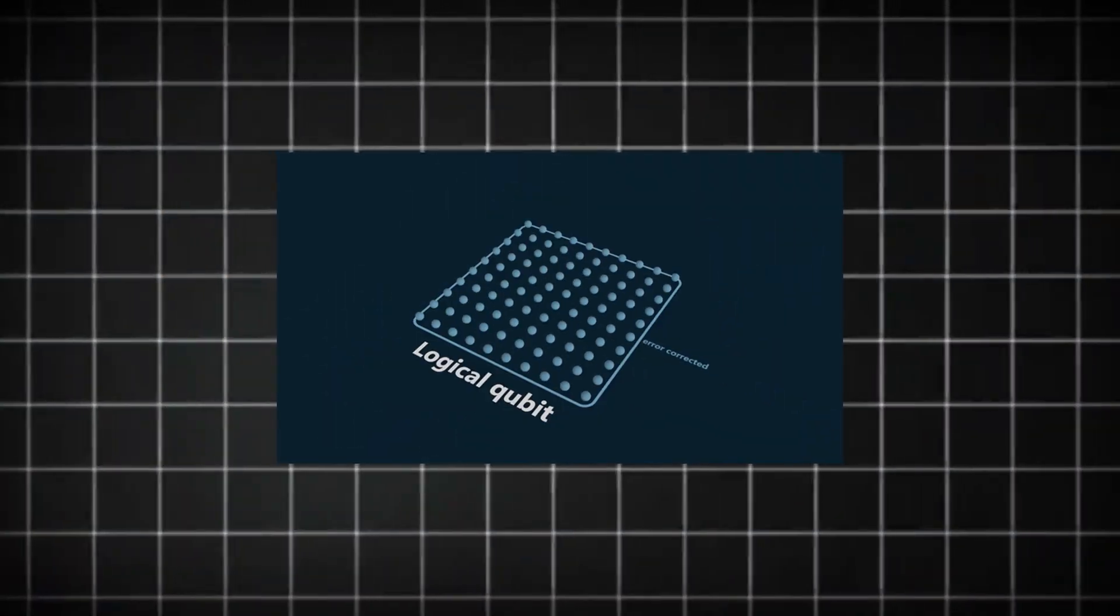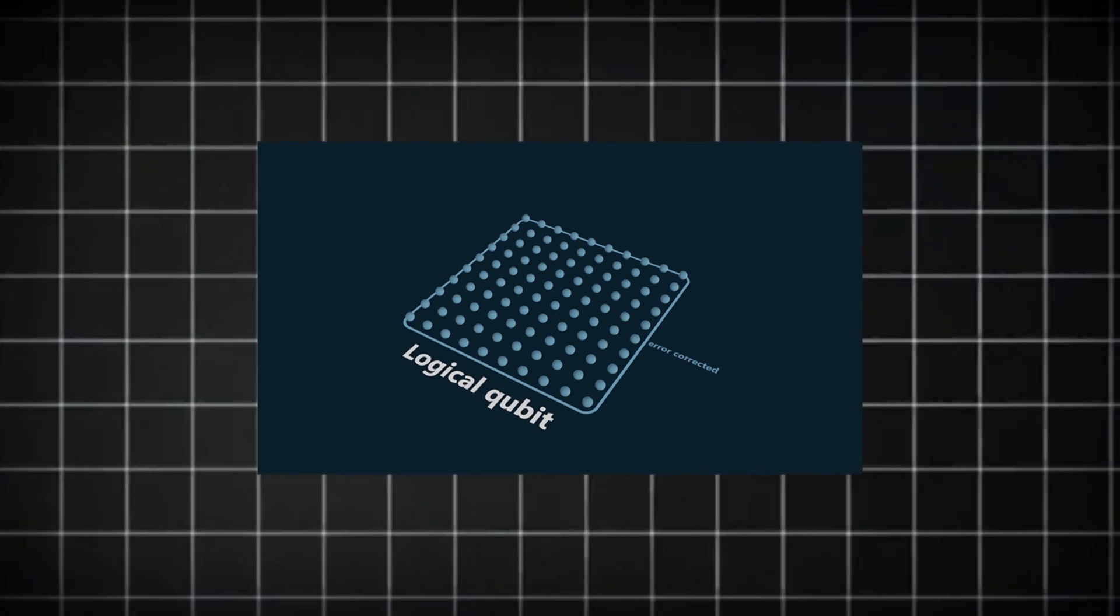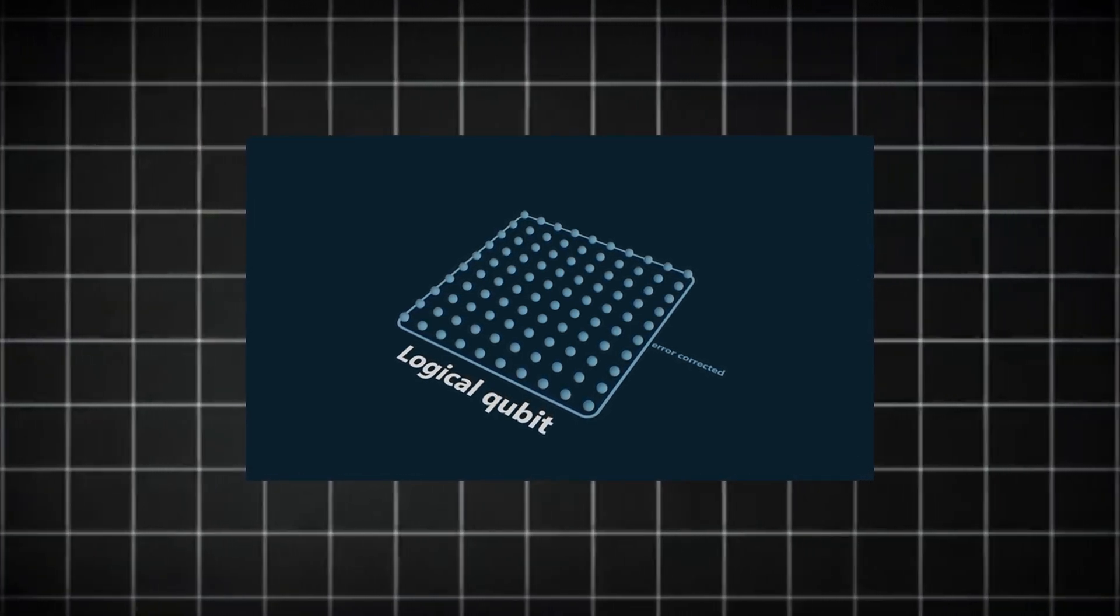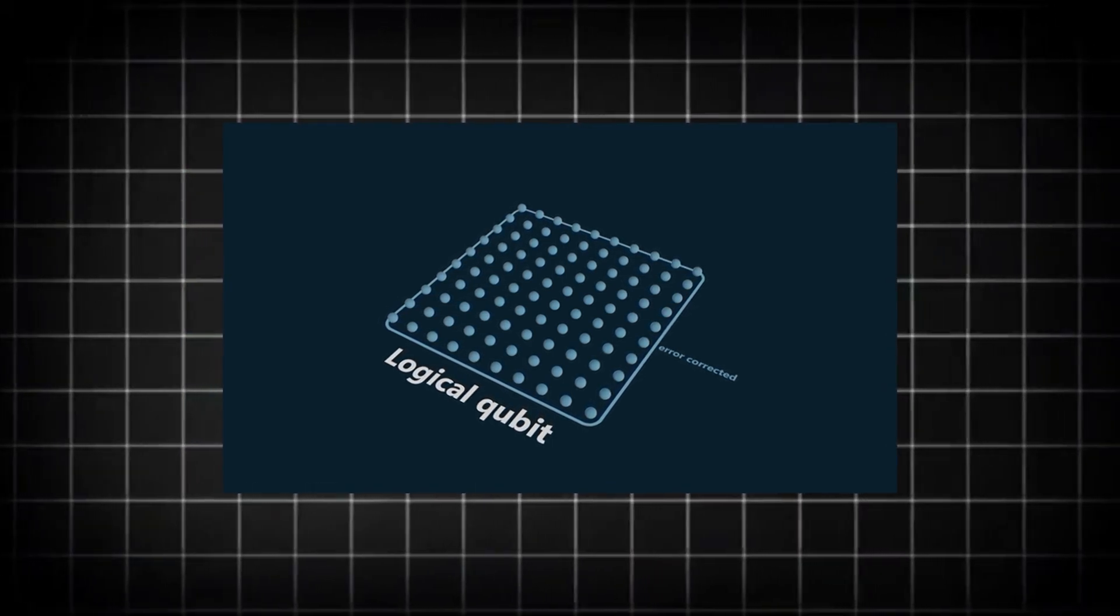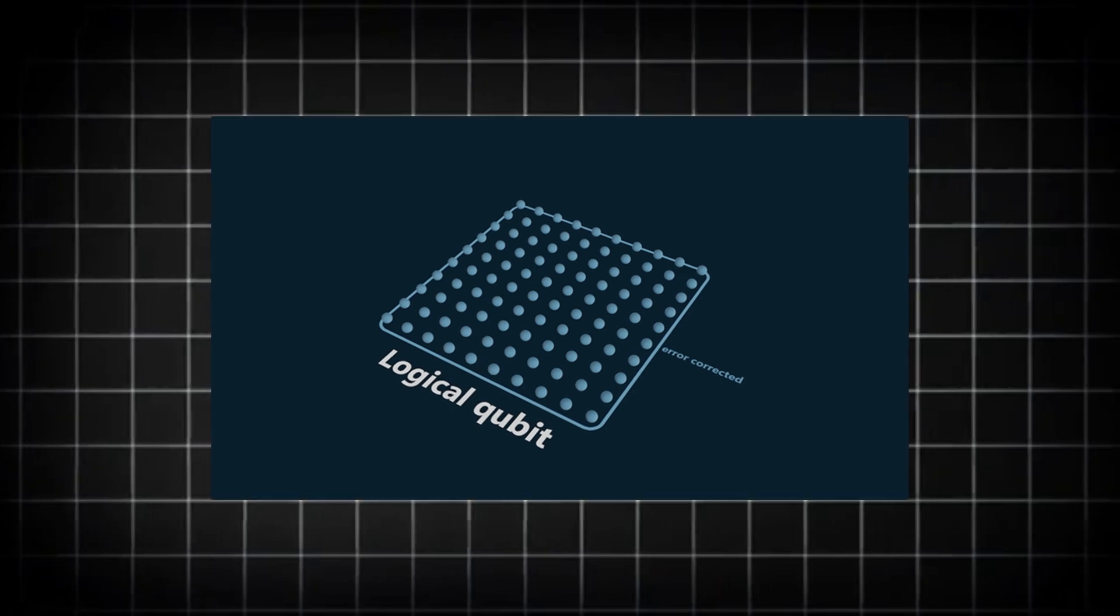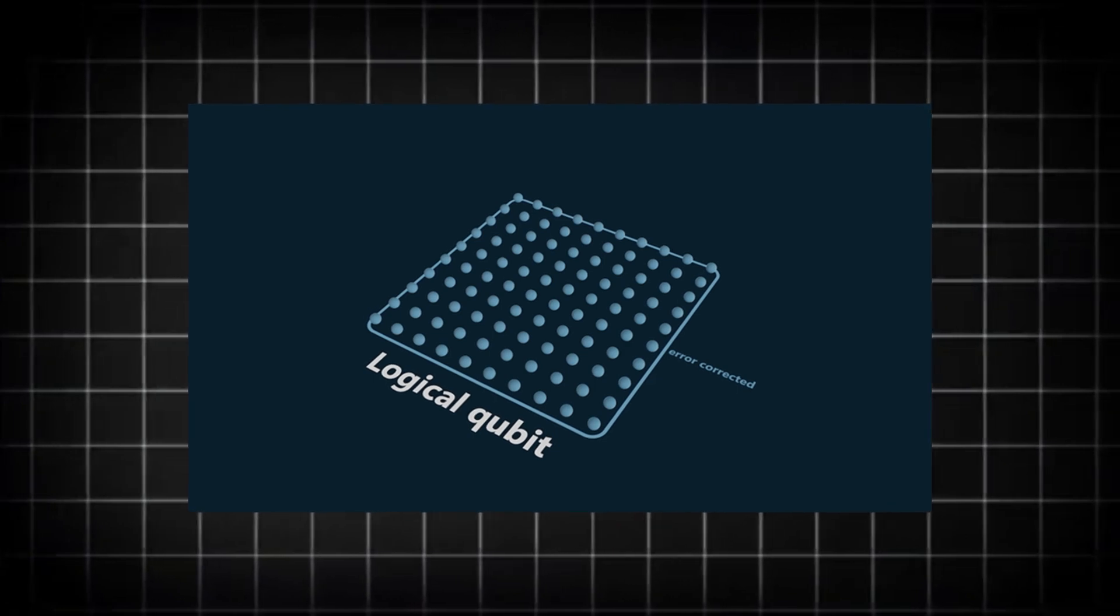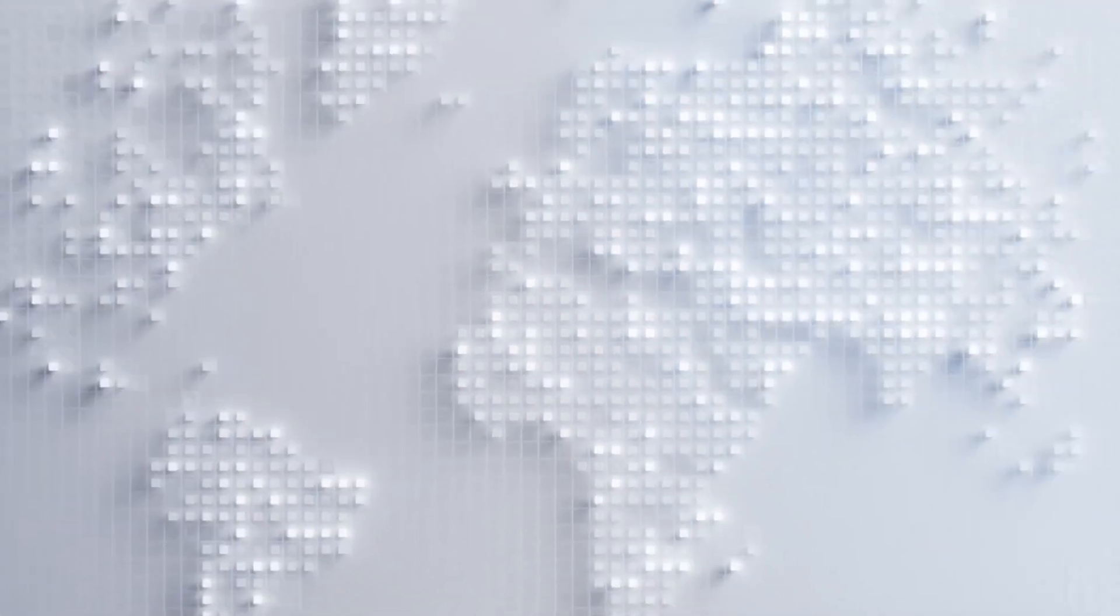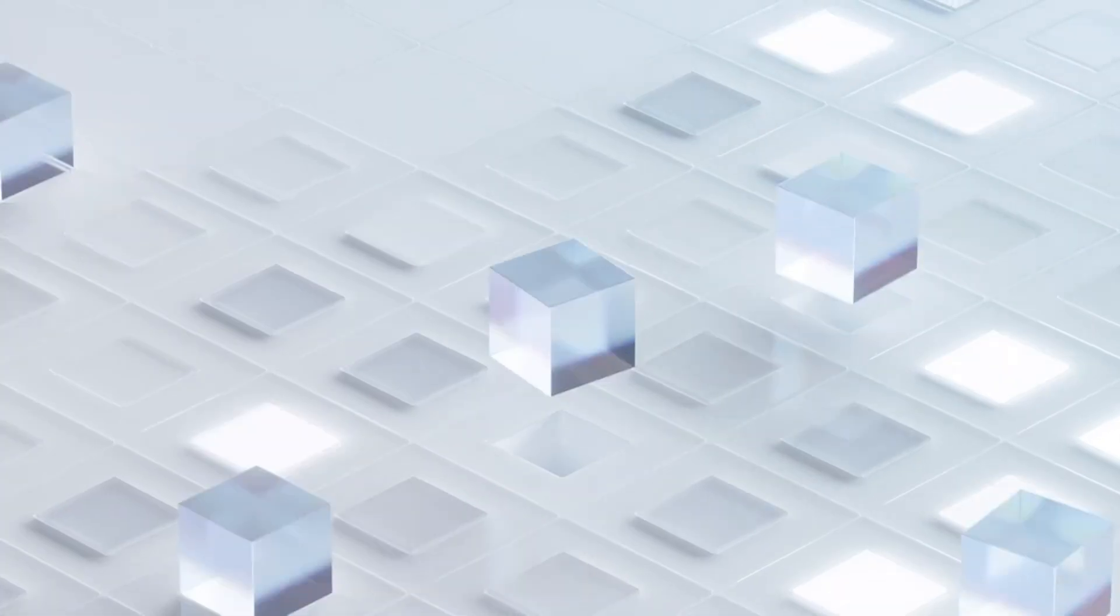How it all began. Initially, Microsoft and Quantinuum were able to generate four logical qubits from 30 physical qubits. Physical qubits are the fundamental building elements of a quantum computer, yet they are prone to mistakes. To address this issue, organizations combine many physical qubits to form a single logical qubit, which is more stable and trustworthy. The most intriguing aspect of their initial breakthrough was that the logical qubits they created had an error rate 800 times lower than the real qubits. In other words, the logical qubits produced far fewer mistakes, which is critical in quantum computing.